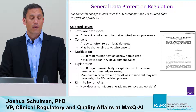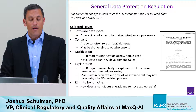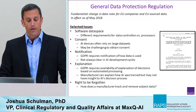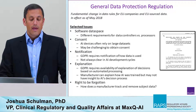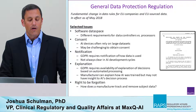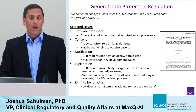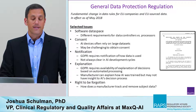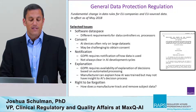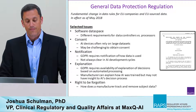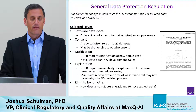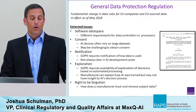In addition, GDPR requires notification — that means notification of how the data is going to be used. In addition, there's the factor of explanation. GDPR requires the availability of explanation of decisions based on automated processing. While a manufacturer can explain how an AI system was trained, the manufacturer may not have insight into the AI decision process itself. In addition, GDPR includes the right to be forgotten. Under this right, manufacturers may need to be able to localize and remove subject data that was used in a training system.